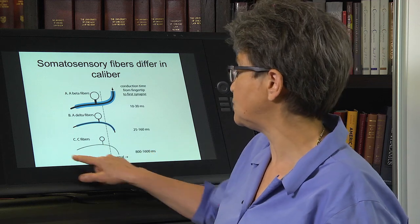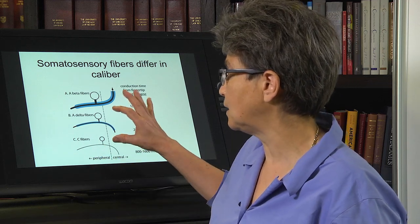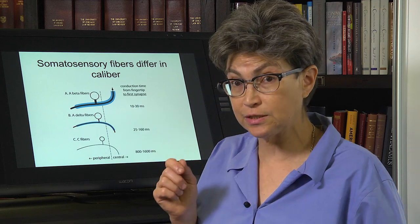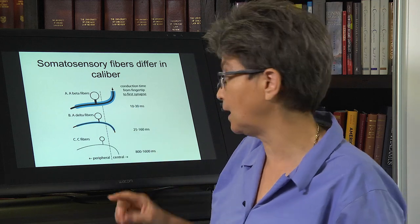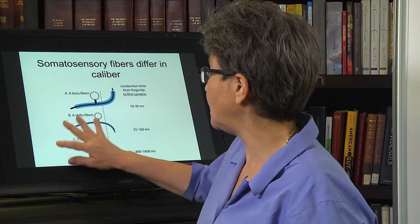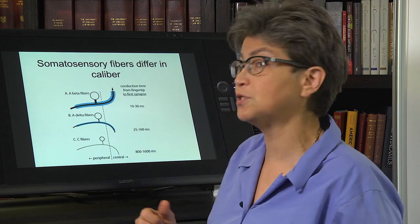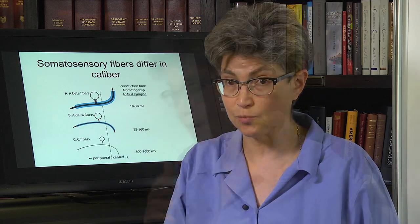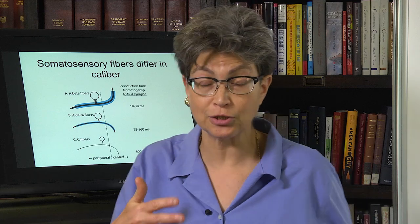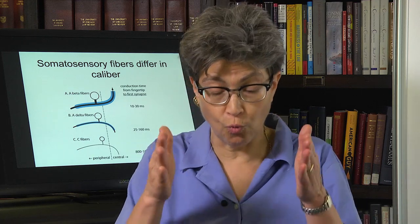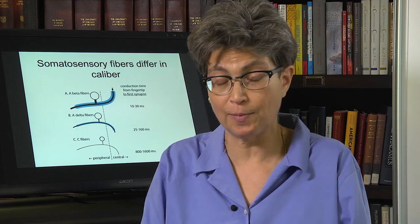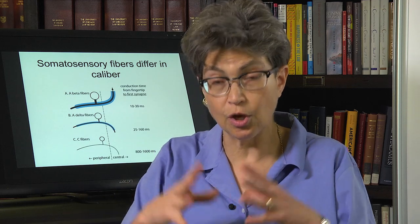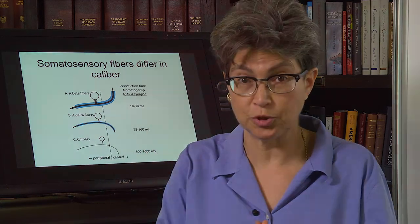We've seen one of those — congenital insensitivity to pain — and we're going to look at that again. In that case, the C-fibers that go out to sweat glands may also be affected. Now let's move on to think about what pain is and talk about an overview of nociception.